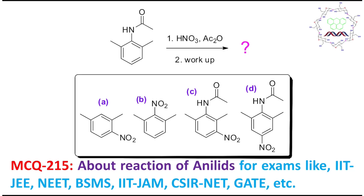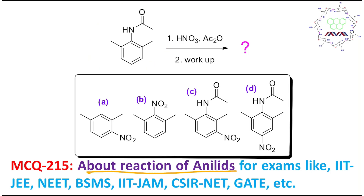Hello students, I am Dr. Tanmay Vishash. I welcome you all to my channel, Chemistry: The Mystery of Molecules. Today's topic of discussion is an MCQ about the reaction of an anilide. This molecule is an anilide — if it is treated with nitric acid and acetic anhydride, what is the major product? Four options are provided and one of them is the right answer.